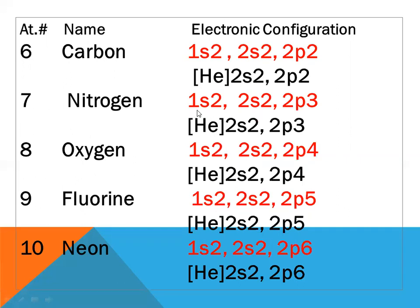Nitrogen, atomic number seven: configuration 1s2 2s2 2p3, accommodating all seven electrons. We place helium instead of 1s2, so the valence configuration is [He] 2s2 2p3. Oxygen, atomic number eight: configuration 1s2 2s2 2p4.